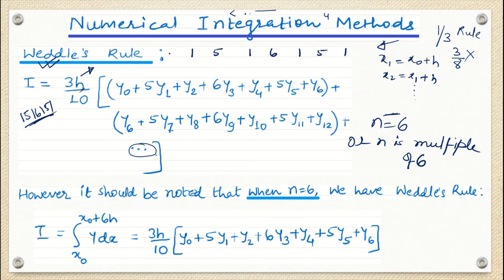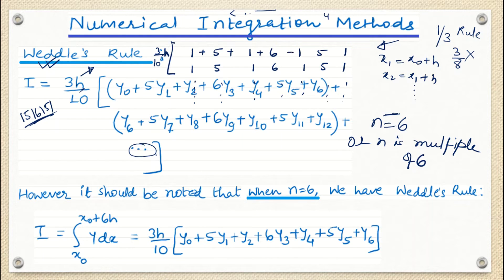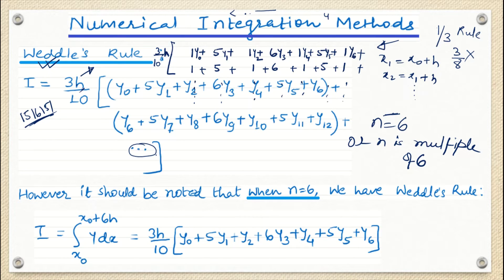So what we are going to do: I'm writing down three-tenths H — just as we wrote one-third or three-eighths in Simpson's rules, here we write three-tenths H. Now I write down 1, 5, 1, 6, 1, 5, 1 with a plus sign between each number. Now I write the corresponding Y values: Y-naught, Y₁, Y₂, Y₃, Y₄, Y₅, Y₆. We stop at Y₆ because N is six, giving us N plus one equals seven ordinates total.